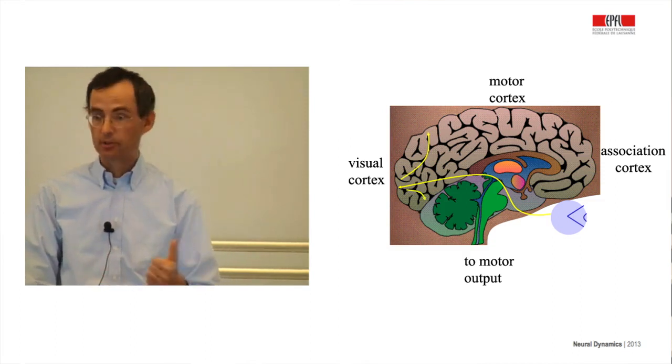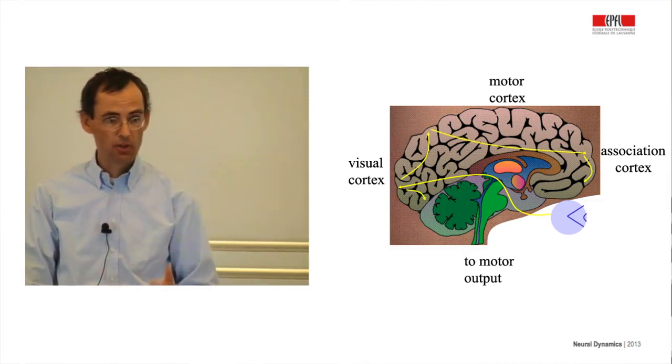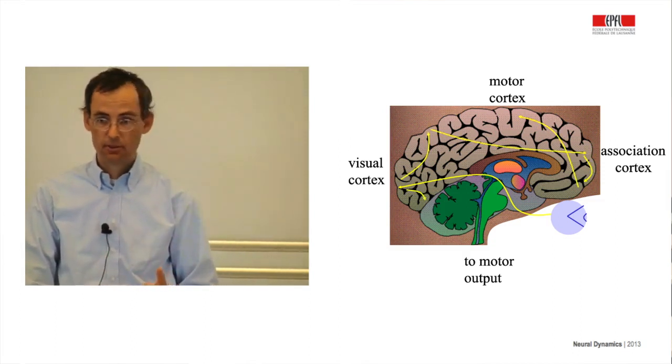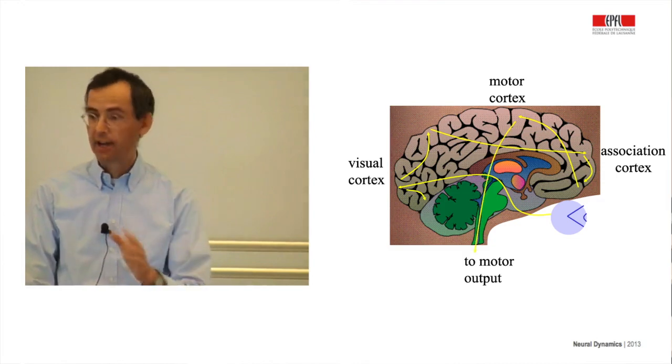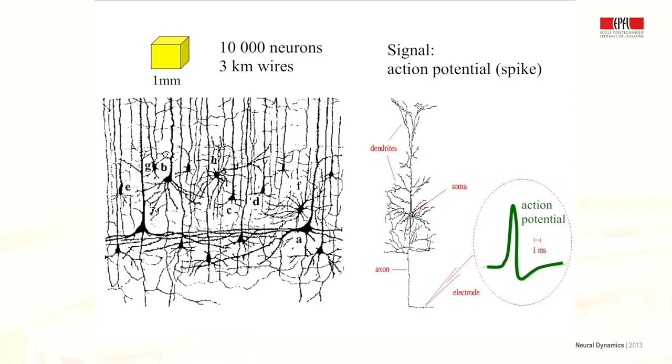This course is about the brain. The brain is made up of billions of cells called neurons, which form an integrated network where each neuron sends signals to thousands of other neurons.